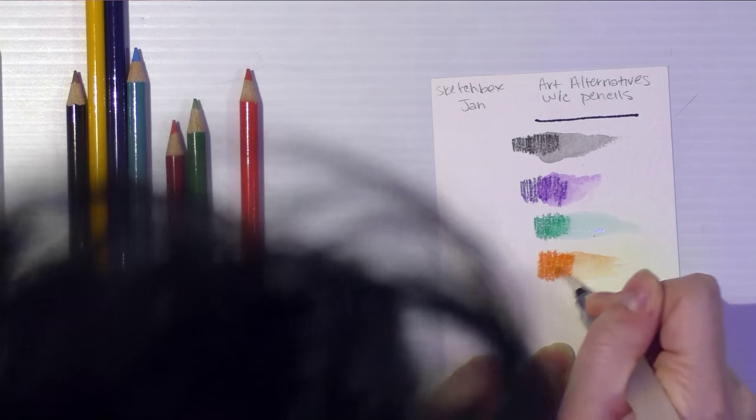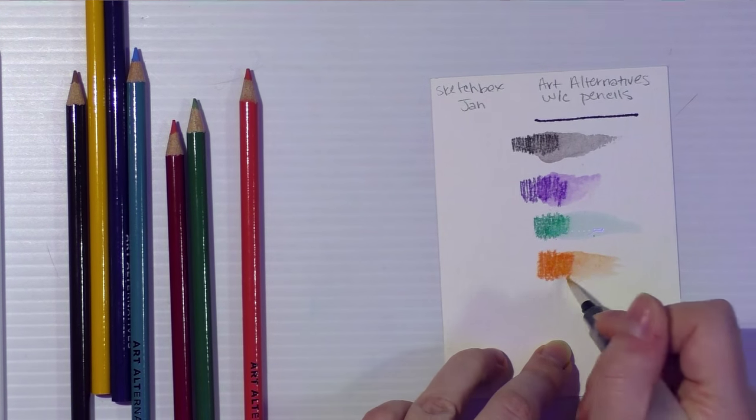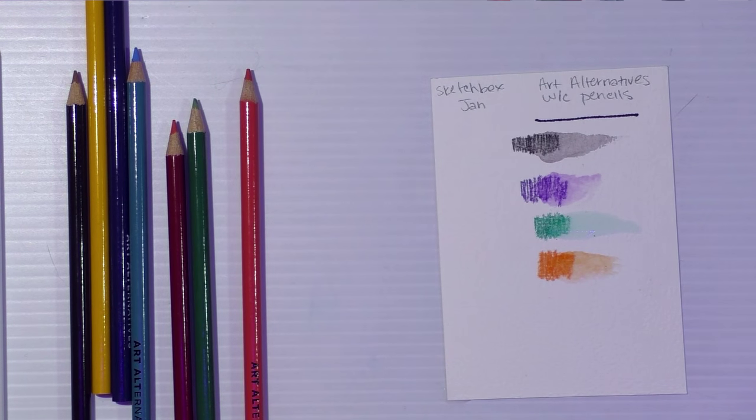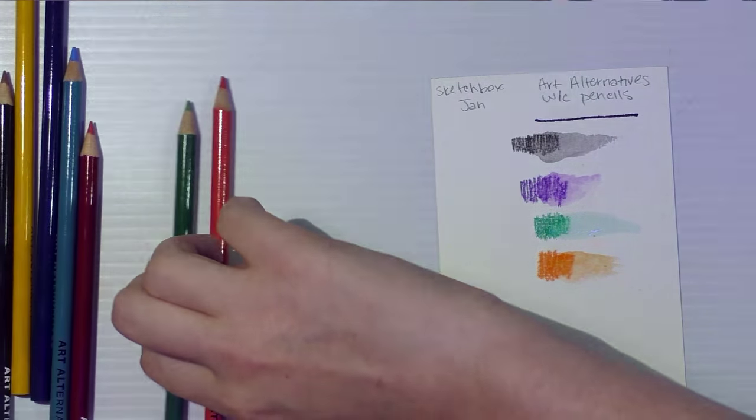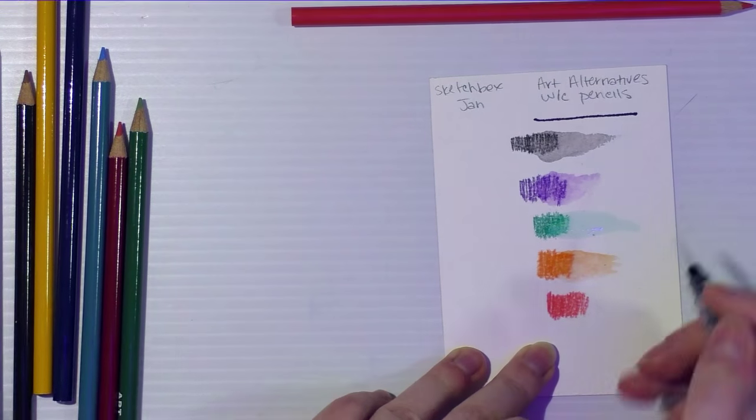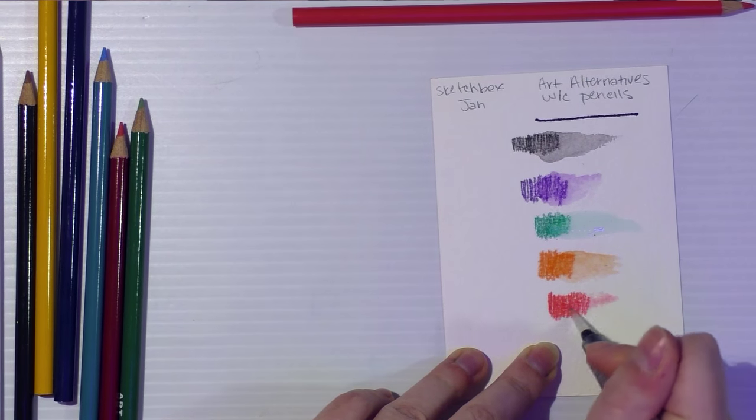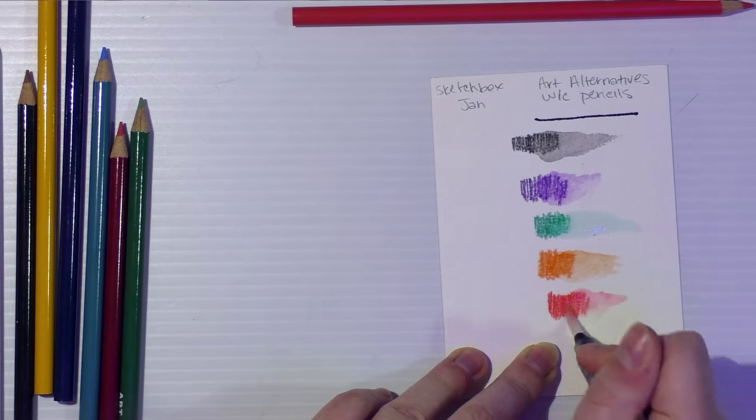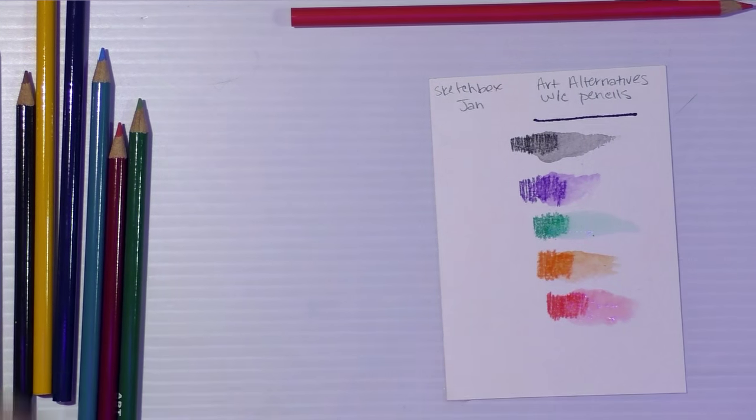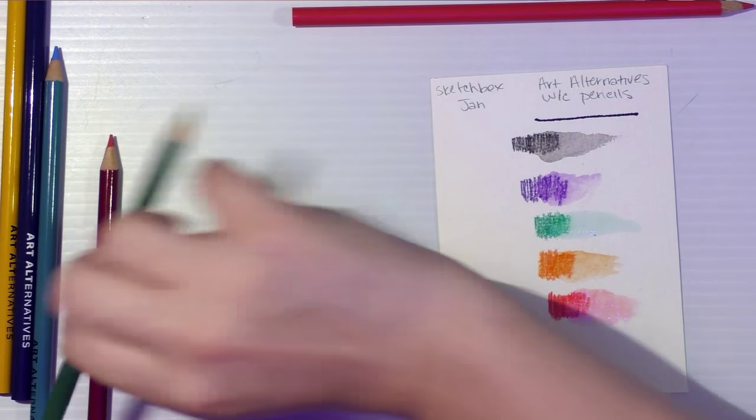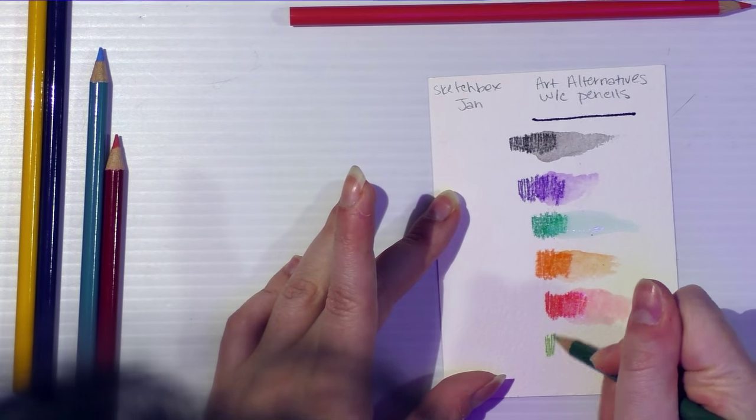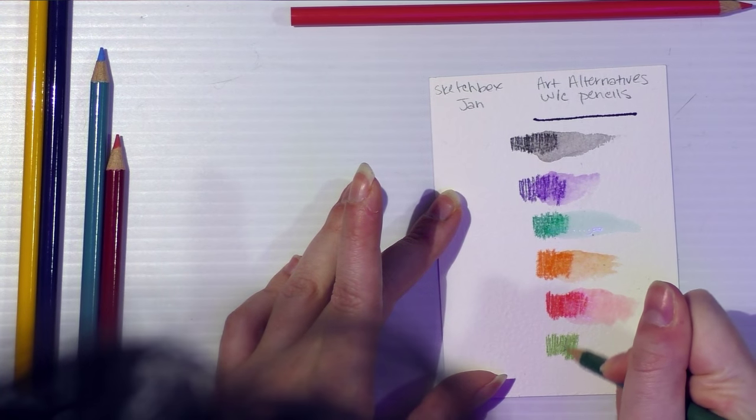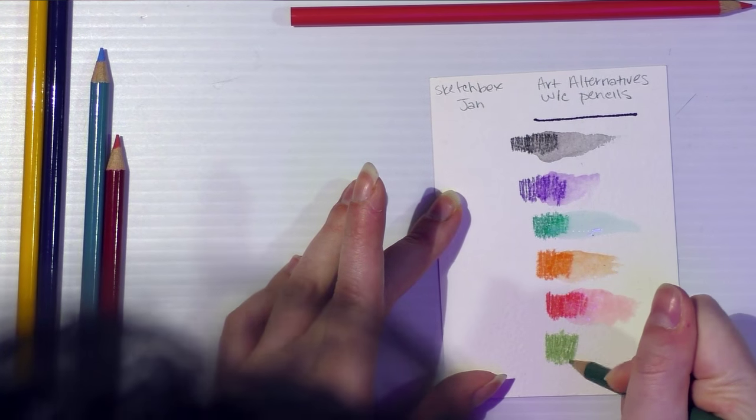Which is a shame. I think you can get Art Alternatives at Michael's, some independent art supply stores. Their canvases are actually okay. I do my Posca stuff on their canvases. But, in general, I don't buy Art Alternatives personally. And I'm pretty disappointed, to be honest, that I was sent Art Alternatives.